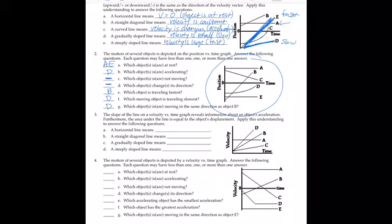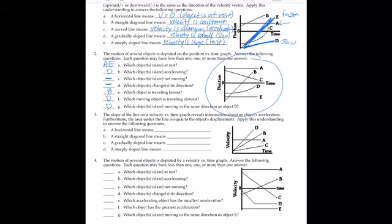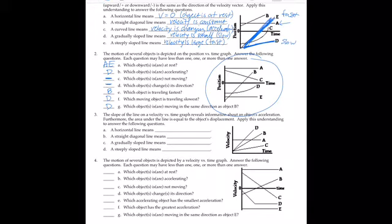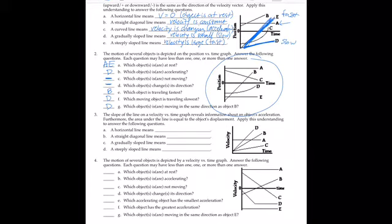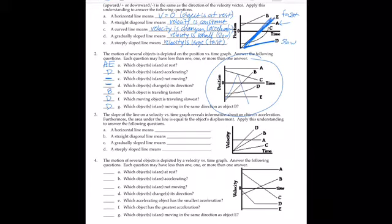Which objects are moving in the same direction as object B? That would be D — it's the only other line going upward in the positive direction. To clarify changing direction: that would look like a line heading upward then reversing downward, but none of these objects show that behavior.